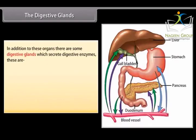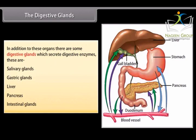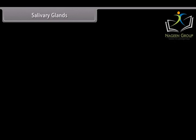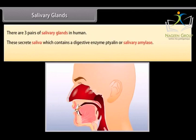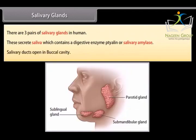The digestive glands include: salivary glands, gastric glands, liver, pancreas, and intestinal glands. There are 3 pairs of salivary glands in humans that secrete saliva, which contains the digestive enzyme salivary amylase (tyalin). The salivary ducts open in the buccal cavity.